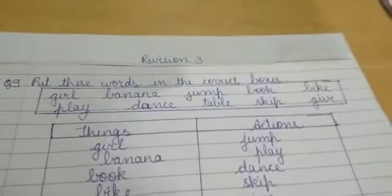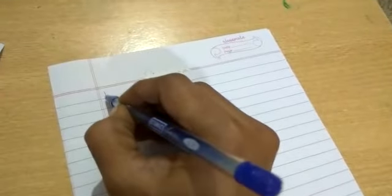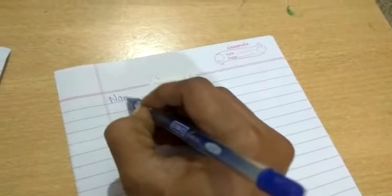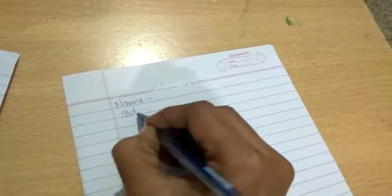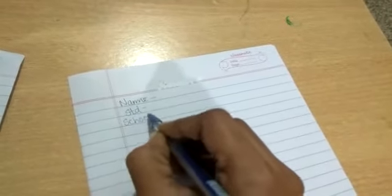Today first before seeing the revision 3 I am just going to explain how to write the exam. Now see children this will be your paper on which you are going to write the exam. First what you have to do is you have to write your name, then you write your standard and then the name of the school. You will write it on a sheet like this.